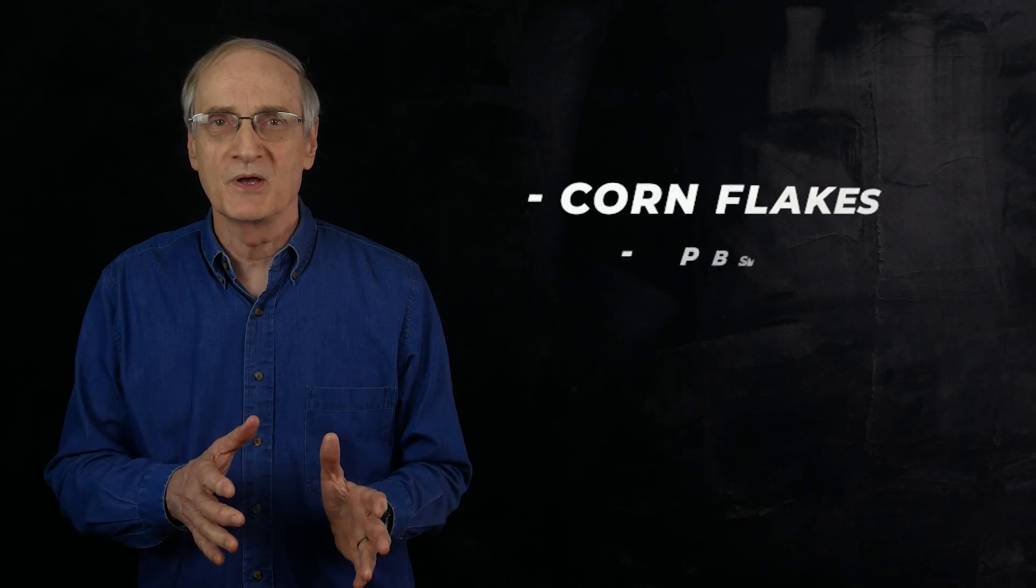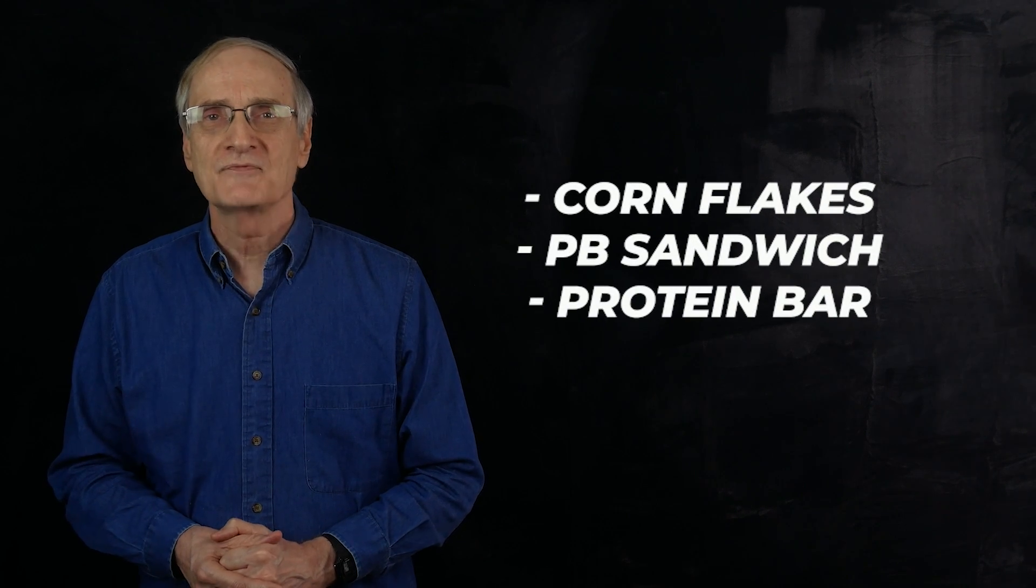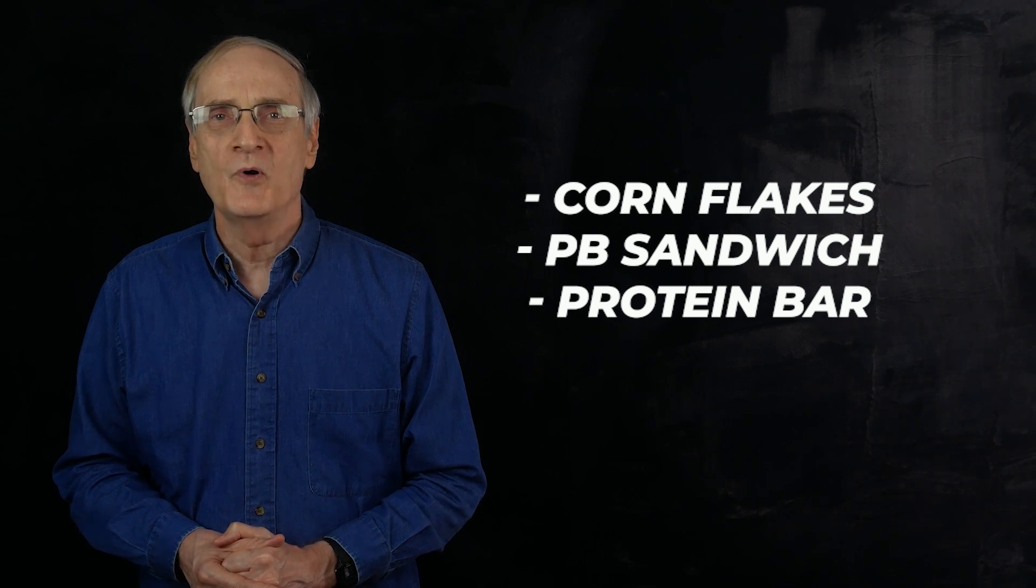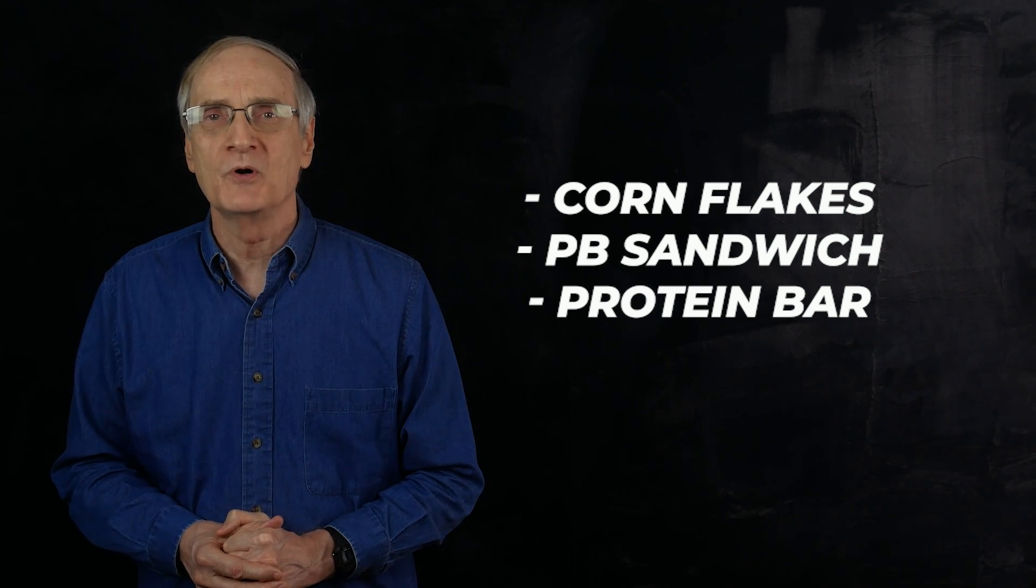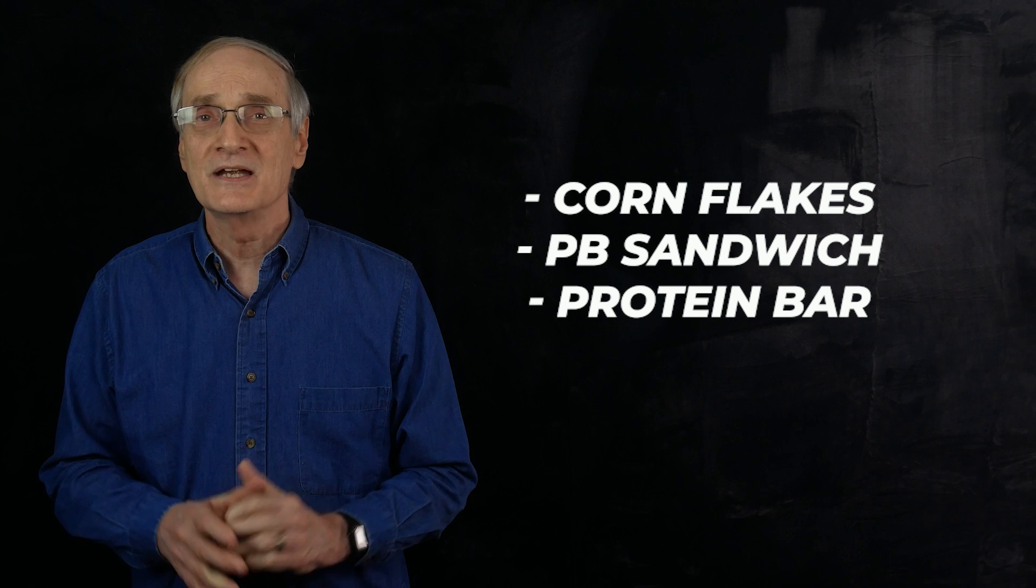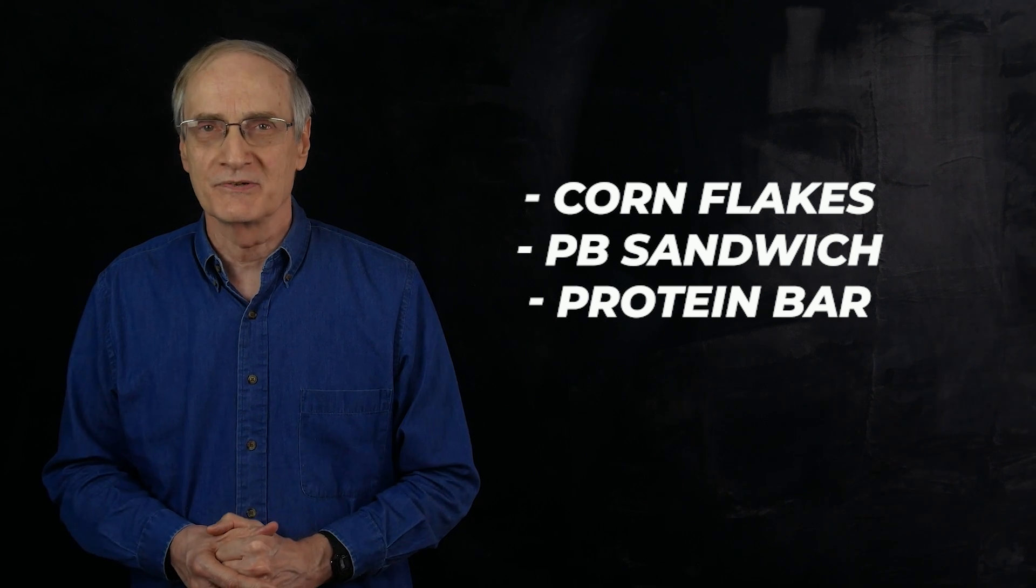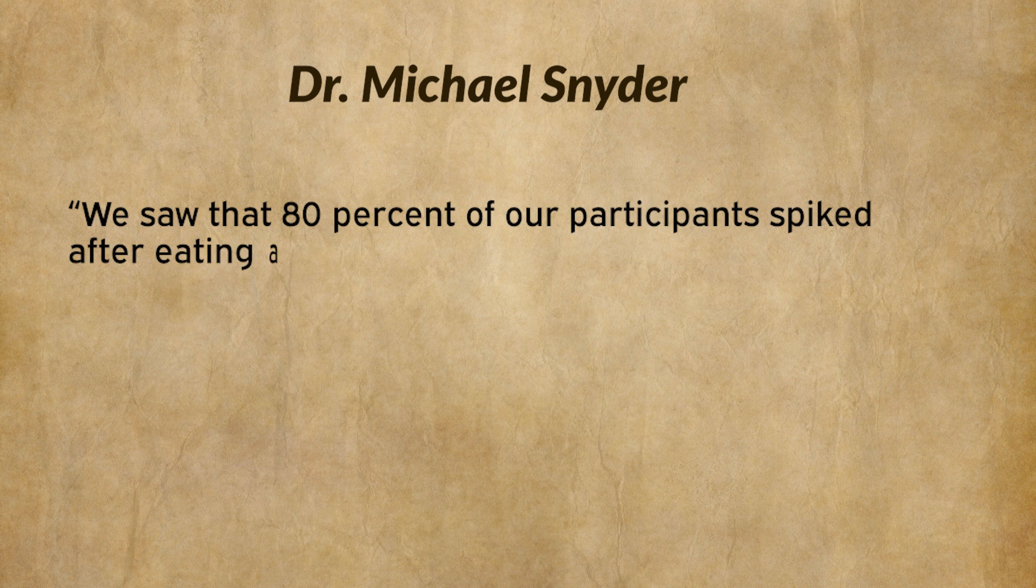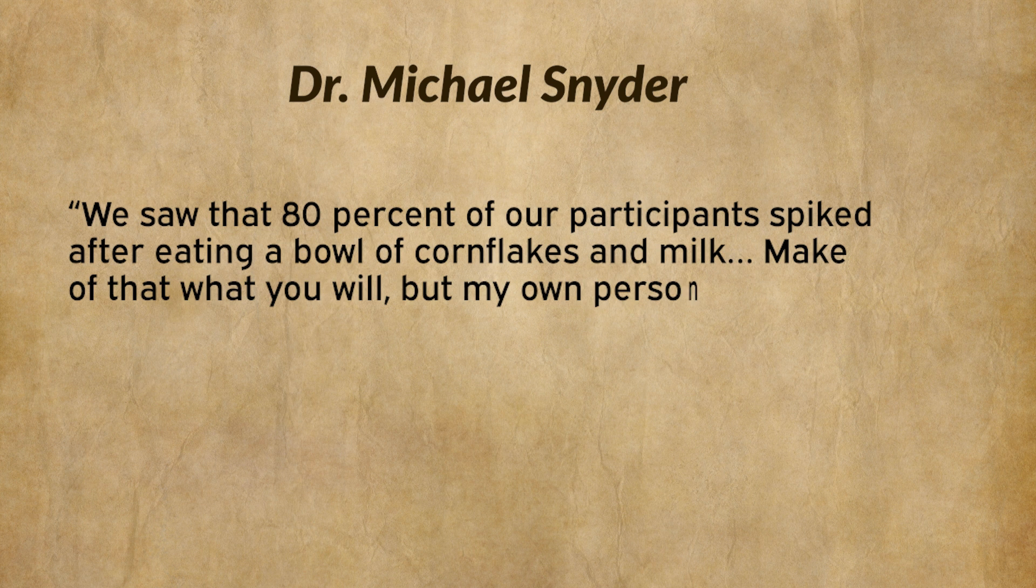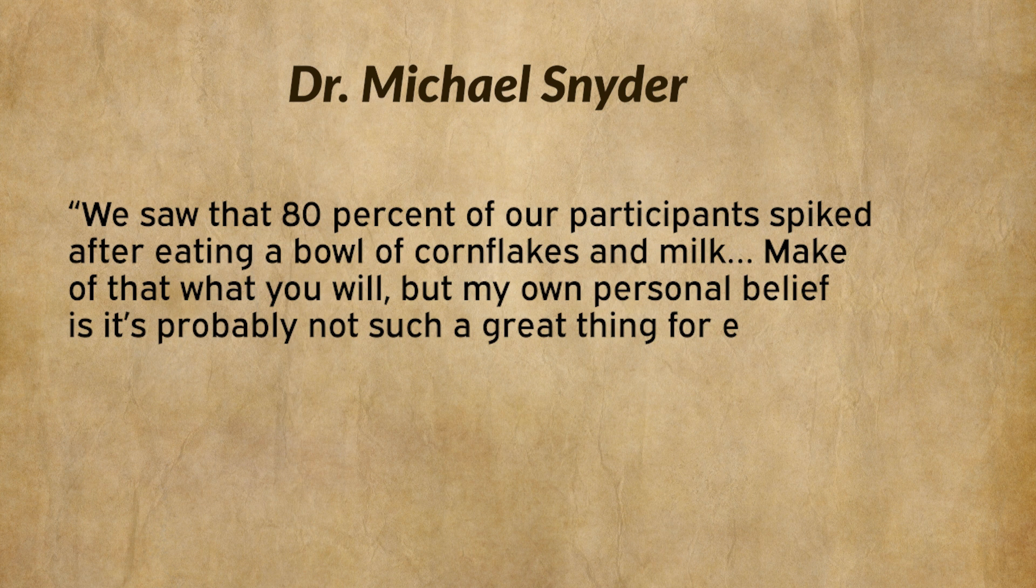Dr. Michael Snyder of Stanford University conducted a little study in which 30 people switched between three breakfasts, a bowl of cornflakes with milk, a peanut butter sandwich, and a protein bar. After the test, they found out that more than half of the group who had shown normal blood sugar on fasting glucose tests spiked just as high as those of people who were diabetic or pre-diabetic. And nearly everybody spiked after eating the cereal, the cornflakes. Snyder reported, We saw that 80% of our participants spiked after eating a bowl of cornflakes and milk. Make of that what you will, but my own personal belief is, it's probably not such a great thing for everyone to be eating. He sounded surprised, but that doesn't surprise me at all.